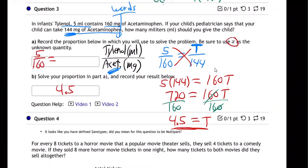And oh, they want you to use X. So I'll have to put X instead of my T, because they said use X. So there we go. So you should give the child 4.5, 4.5 milliliters of the Tylenol.